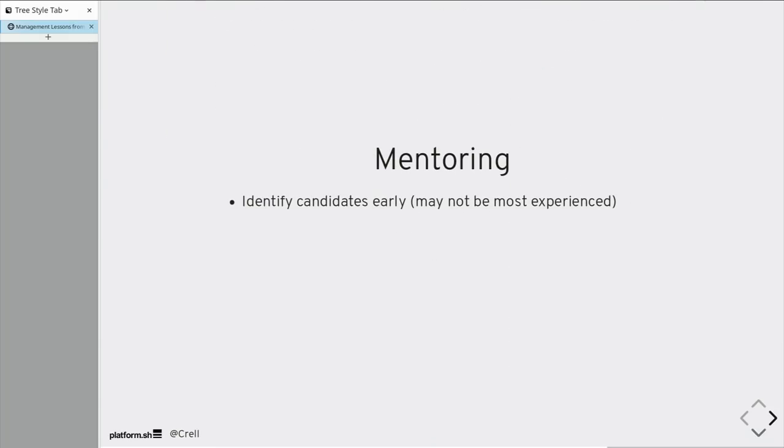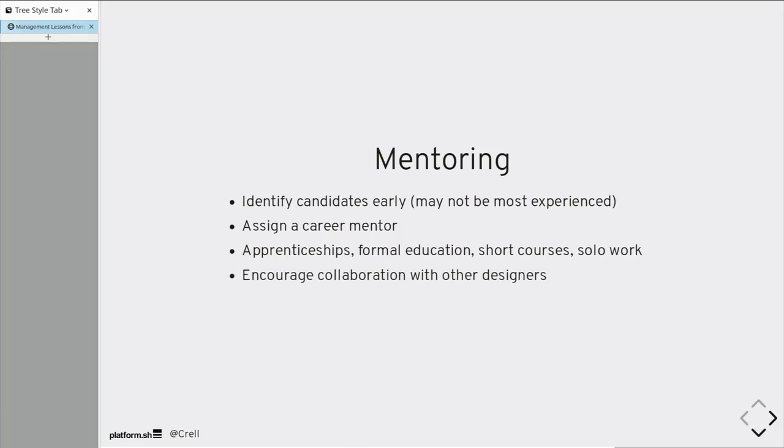How do you get those people? Through mentoring. Identify candidates early on. Give those people a career mentor. Active mentoring. Give them someone they can bounce ideas off of who can actively work with them to help shape their career as a designer, as an architect. Give them apprenticeships. Give them formal education. Give them opportunities to work on projects solo as the only architect. Work with a senior architect on larger projects. Get them to collaborate with other designers. Send them to conferences like this one. All of these are things that the design world does already. We should too.